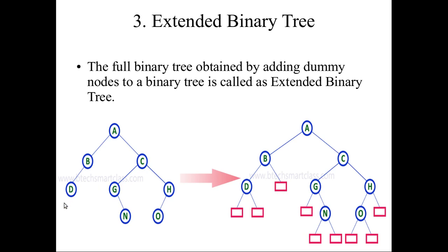D does not have any children — no left and no right subtree — so we are creating dummy variables. Similarly, C has 2 children. G has only 1 child and does not have a left child, so we create one dummy variable. H has only 1 child with no right subtree. N and O have no left or right subtrees, so we are creating dummy variables. By creating dummy variables we are just extending the binary tree — this is called an extended binary tree.